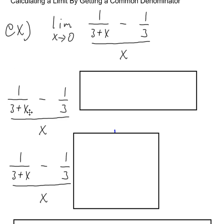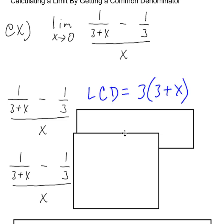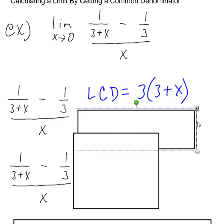So I'm looking at the numerator here, the one over three plus x minus one over three. And I'm thinking, well, what's the common denominator for those two fractions, those two rational expressions? And it works out the lowest common denominator is the product of them.